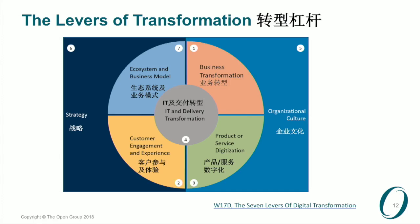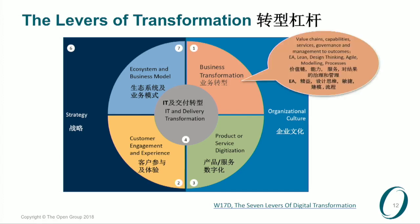This publication — The Seven Levels of Digital Transformation from the Open Group — at the business transformation level is where you start to see the phrases around value chains, capabilities, governance, management outcomes, and EA lean and design thinking showing up most. This is not exclusively where these terms show up, but generally where they show.